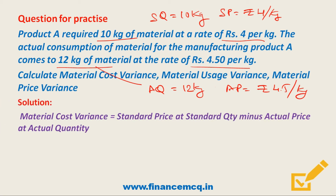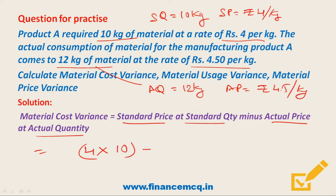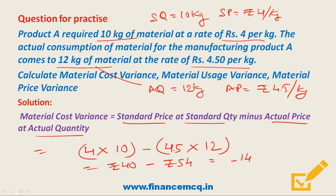First, let's solve Material Cost Variance. Formula: (Standard Price × Standard Quantity) minus (Actual Price × Actual Quantity) = (₹4 × 10) minus (₹4.50 × 12) = ₹40 minus ₹54 = minus ₹14. Since the answer is negative, this is an adverse variance.